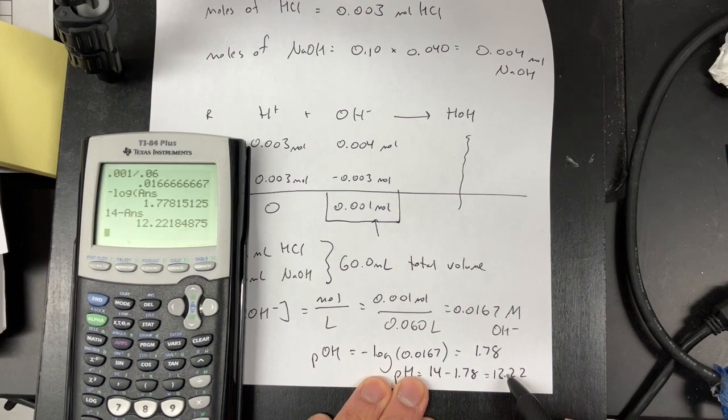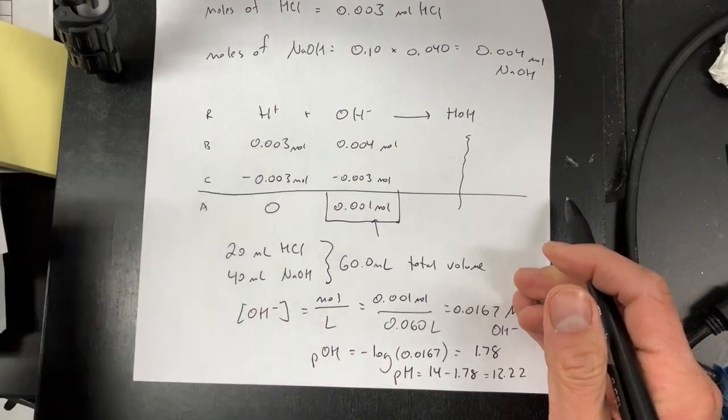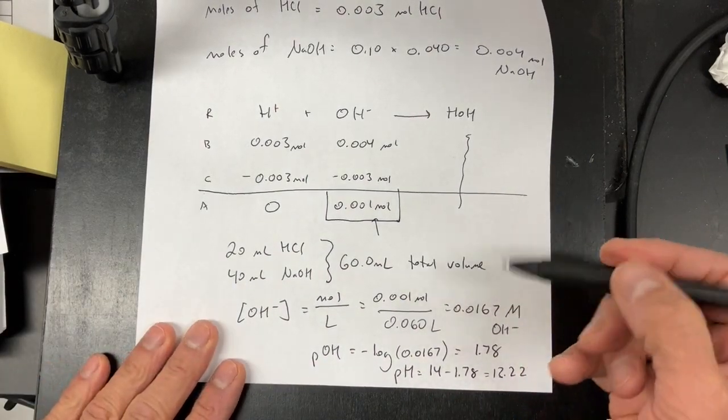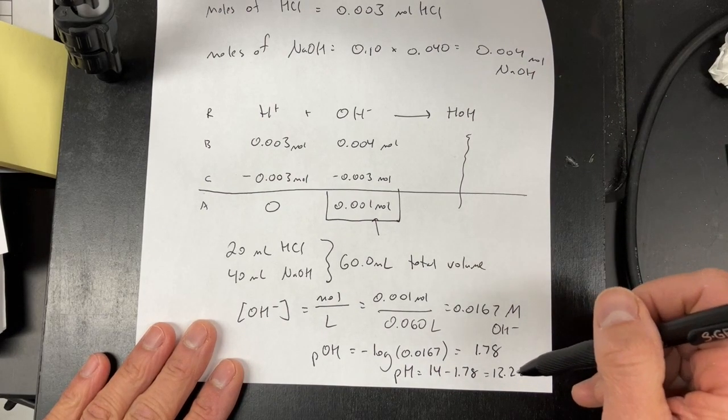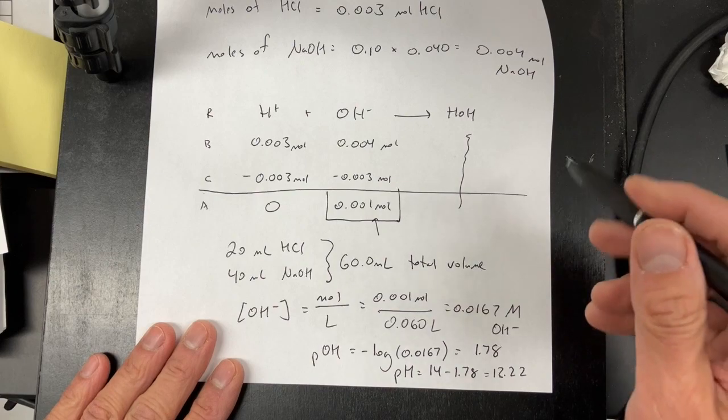Okay. So, that's past the equivalence point. And then, what's at the equivalence point? Well, if it's a strong acid and strong base, it should be 7. So, we're past higher than 7. And before, we're below 7.